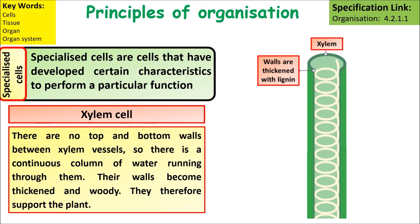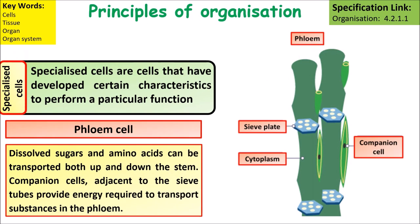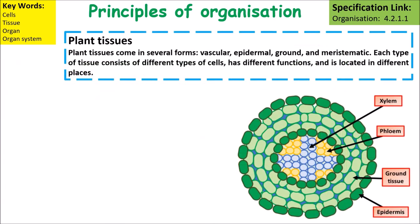There are also specialised tissues in plants. Xylem tissue carries water through the plant. Phloem tissue carries the sugars — sucrose and glucose — produced during photosynthesis through the plant. Plant tissues come in several forms: vascular, epidermal, ground, and meristematic tissues. Each type contains different cells, has different functions, and is located in different parts of the plant.